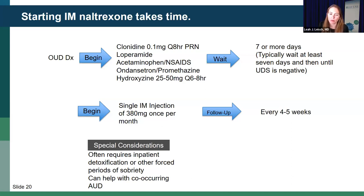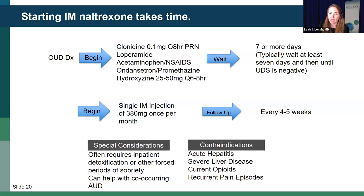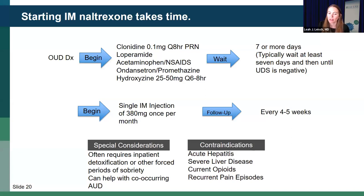Naltrexone can be helpful with co-occurring alcohol use disorder. Contraindications include acute hepatitis or severe decompensated liver disease, current opioid use, and patients with recurrent severe pain episodes — such as sickle cell disease — that would require opioids for pain care, because once on naltrexone, opioids will not work for pain. Patients may need an anesthesiologist involved if they have acute pain events, requiring very high doses of IV fentanyl and ketamine to achieve pain control.